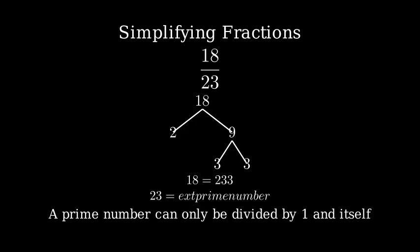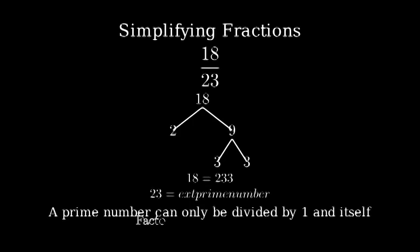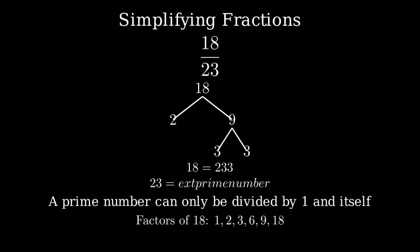To simplify a fraction, we need to find the greatest common factor between the numerator and denominator. Let's list out all the factors of 18: 1, 2, 3, 6, 9, and 18.